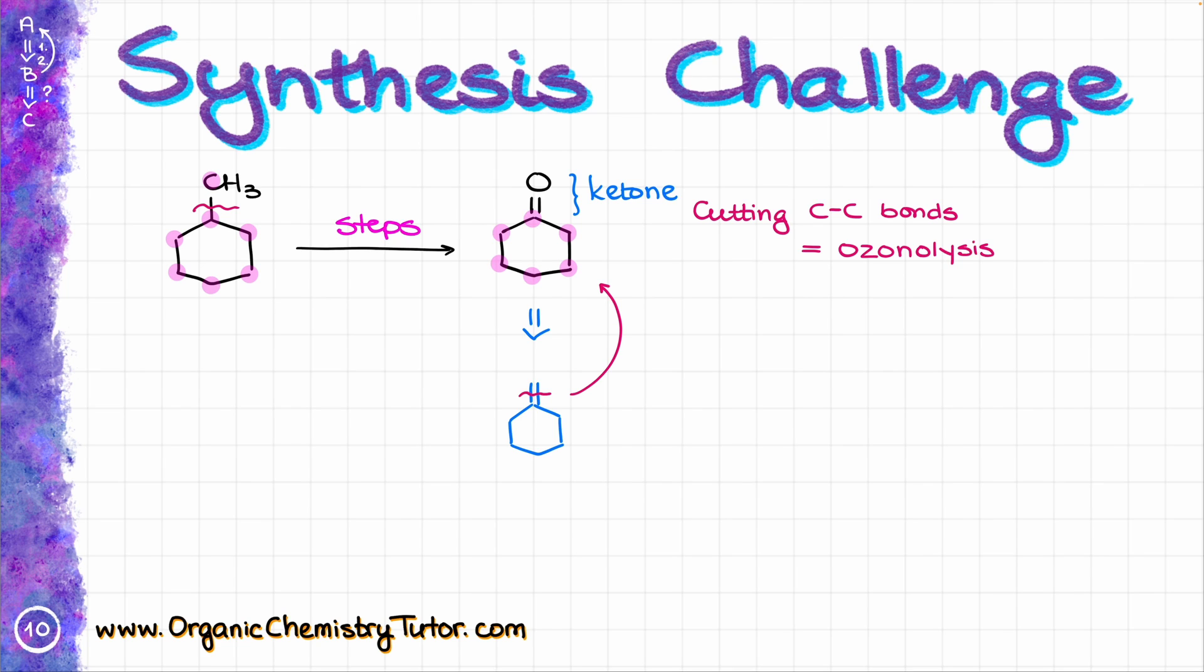So in order to do that, I'm going to do step number one, which is going to be the ozone, and step number two of my ozonolysis here is going to be either a reductive or oxidative workup. In this case it doesn't really matter, so let's say I'm just going to say that my second step here is DMS, and I will remind you that DMS is dimethyl sulfide, so that is CH3, sulfur, and another CH3 here, in case your instructor is one of those teachers who really love structures instead of abbreviations.